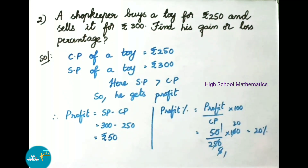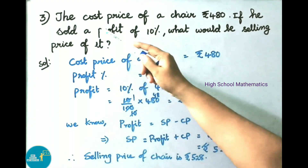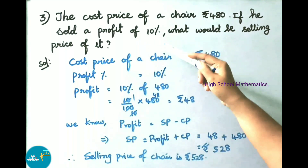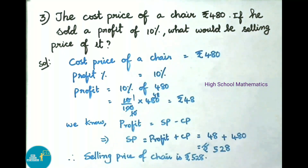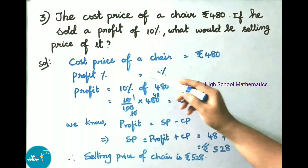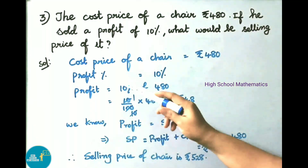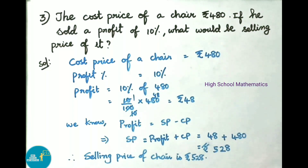Question number 3: The cost price of a chair is 480 rupees. If it is sold for a profit of 10 percent, what would be the selling price? Solution: given cost price of a chair is 480 rupees and profit percentage is 10 percent. Now we shall find the profit.